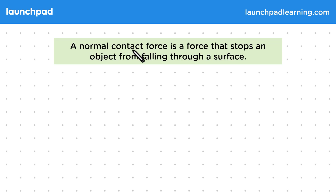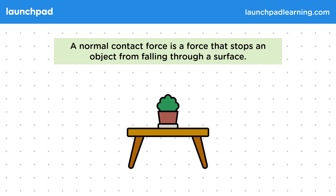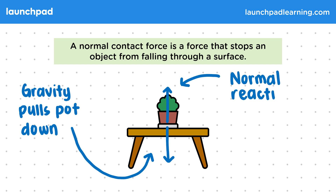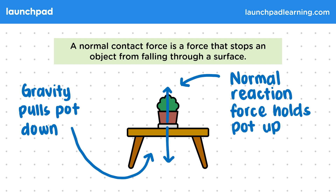A normal contact force is a force that stops an object from falling through a surface. Consider a pot resting on a table. Gravity is pulling the pot down, but the pot doesn't fall through the table as it's stopped by a normal contact force which holds the pot up. The direction of the normal contact force is perpendicular to the surface, and this force only acts when an object pushes against the surface.